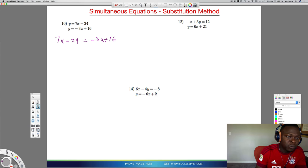At this point, we want to bring like terms together. You have 7x here and minus 3x here. I'm going to move the minus 3x because it's the smaller value. The opposite of minus 3x is plus 3x. So I'm going to do plus 3x on both sides. So over here it goes away. This becomes 10x minus 24 equals 16.